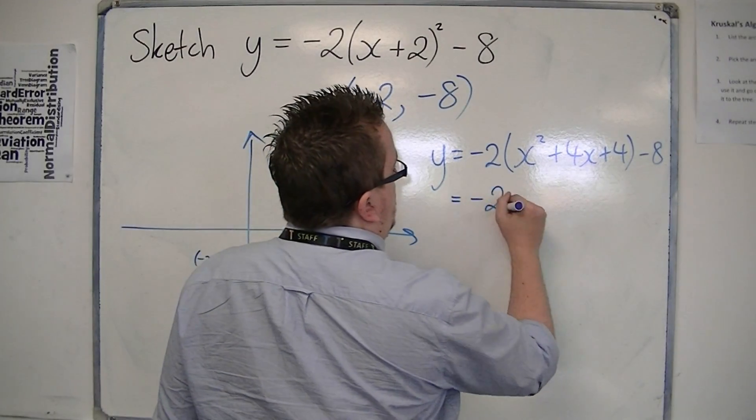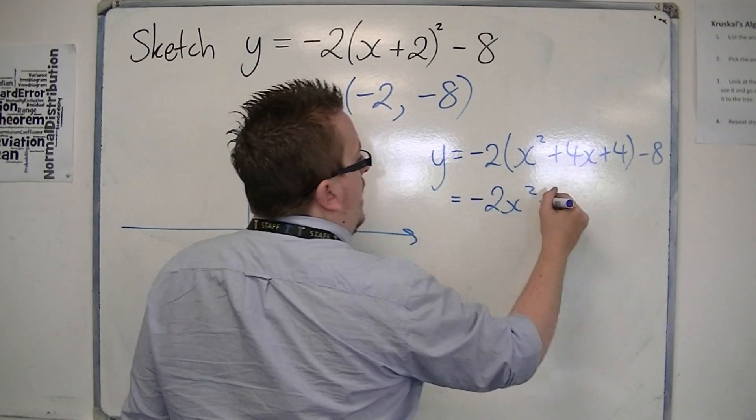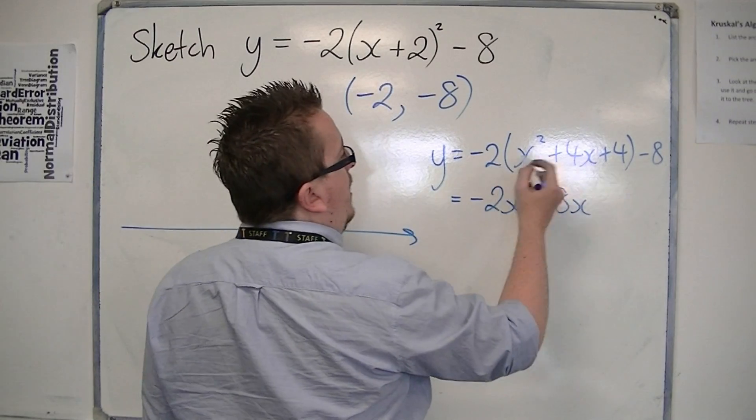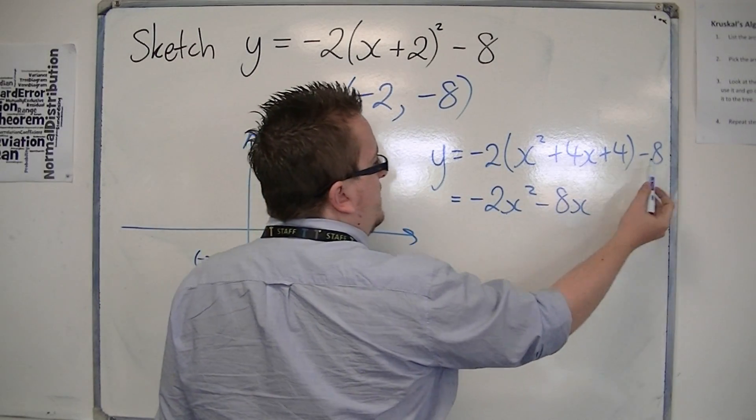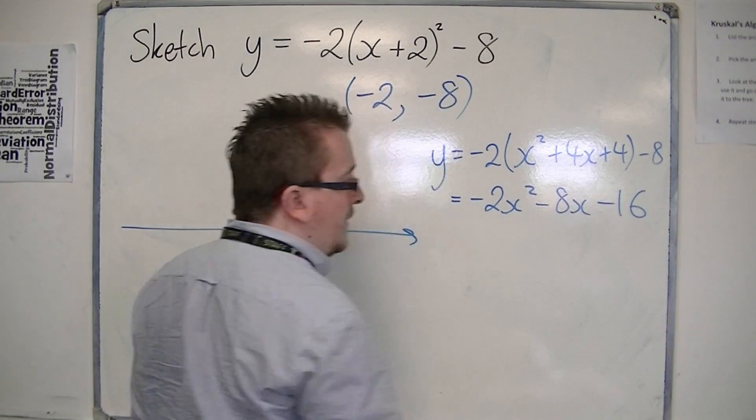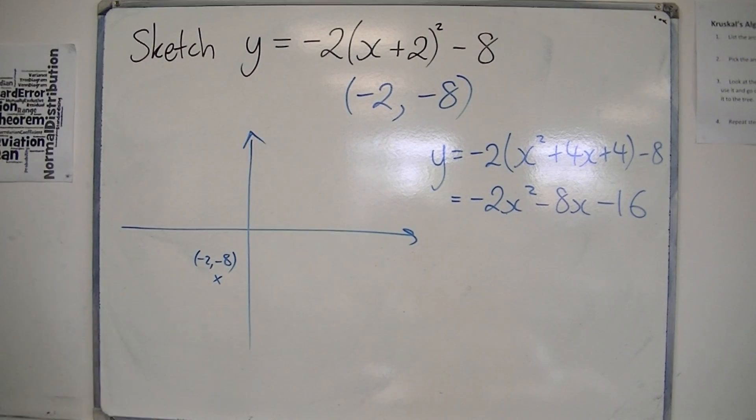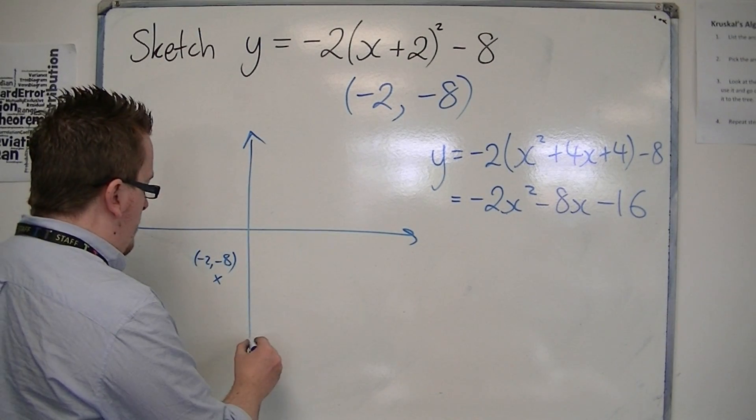So we've got minus 2x squared, minus 8x. Minus 2 times 4 is minus 8, so we've got minus 16. So I know that the curve crosses the y-axis at minus 16.